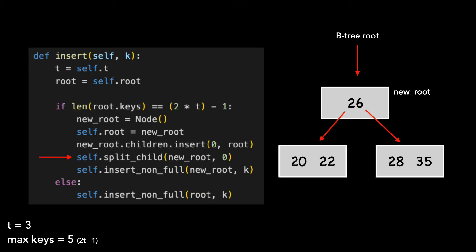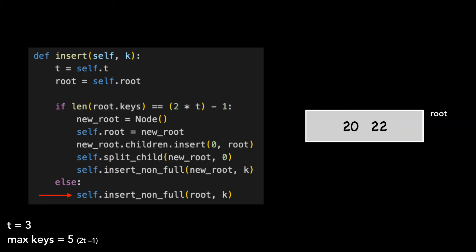We call split child, which splits the old root into two nodes. Finally, we call a new method, insert non-full, which we'll cover in a bit. If the root is not full, we simply call insert non-full. Let's look at that code now.